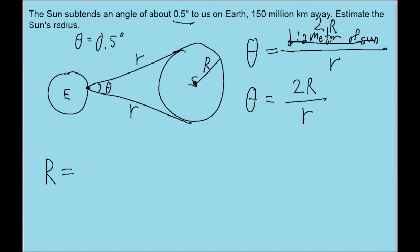So if we do that, then we get a formula for big R of 1 half of theta times small r. So the radius of the sun is equal to 1 half times the subtended angle times the distance from the Earth to the sun. And all we got to do from there is just plug in the values given to us by the problem.